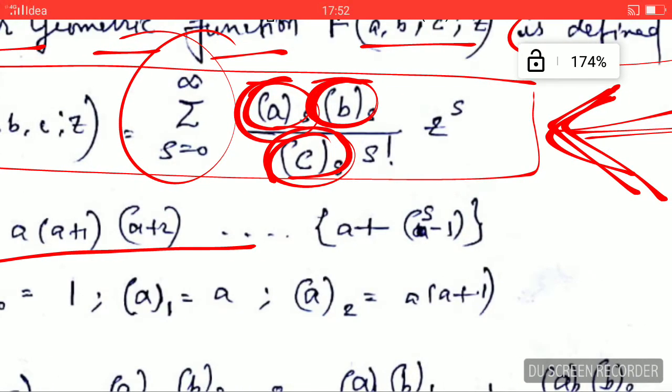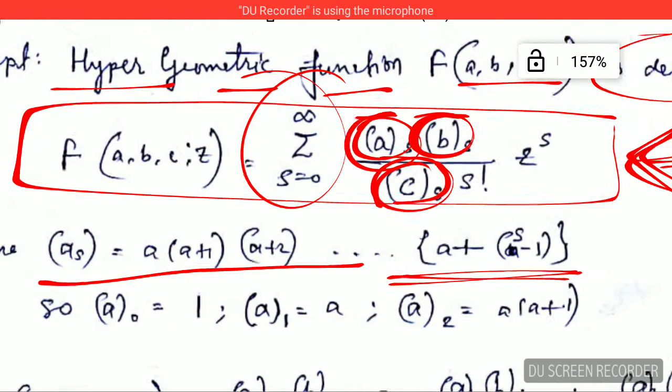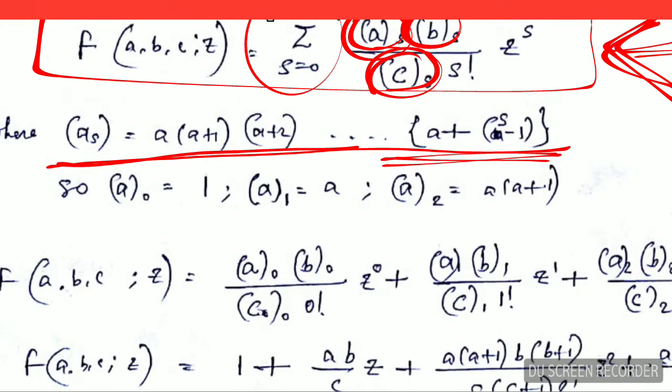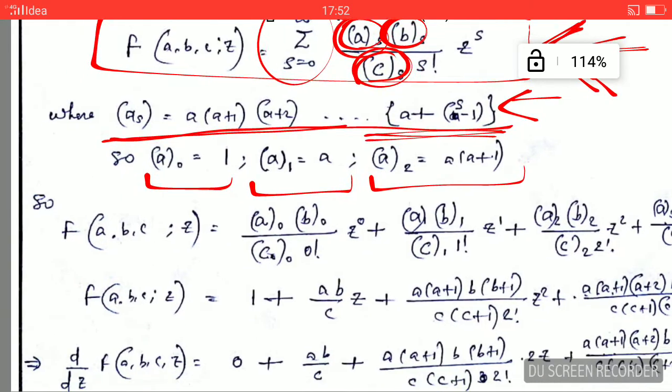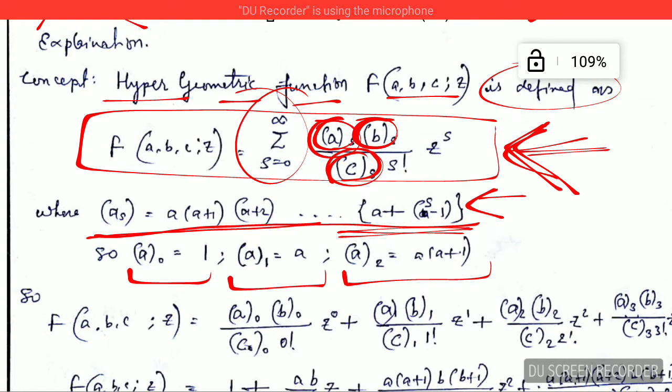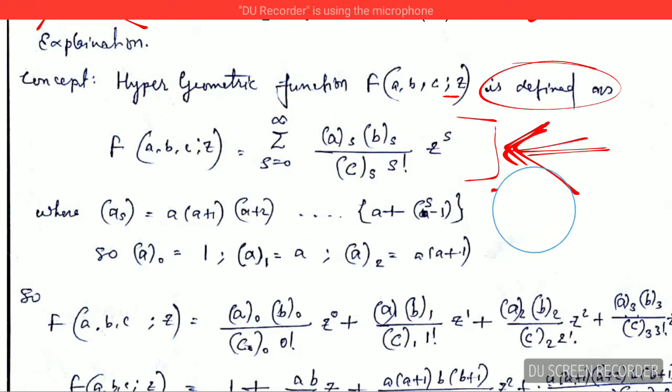It goes up to s minus 1. You can remember how this a_s goes. The value of a_0 is 1, the value of a_1 is a, the value of a_2 is this much, and this all comes from this. Now, what I am going to do is just wait for a second.